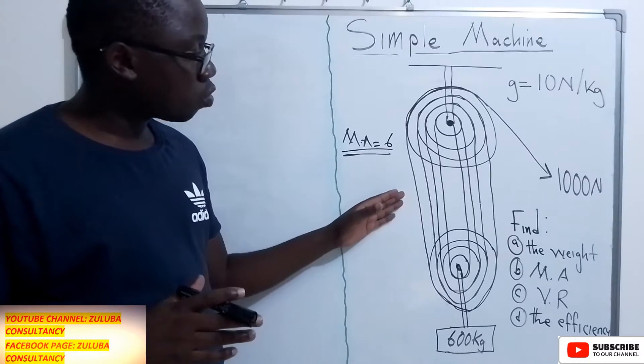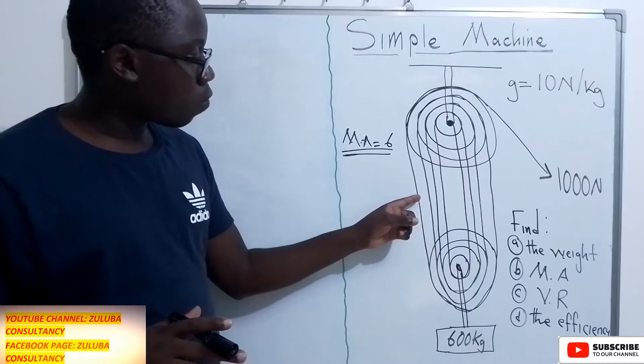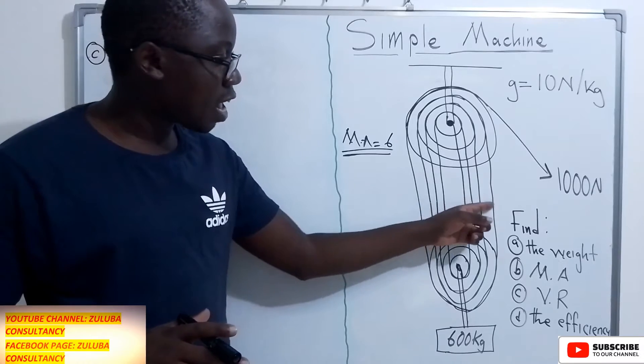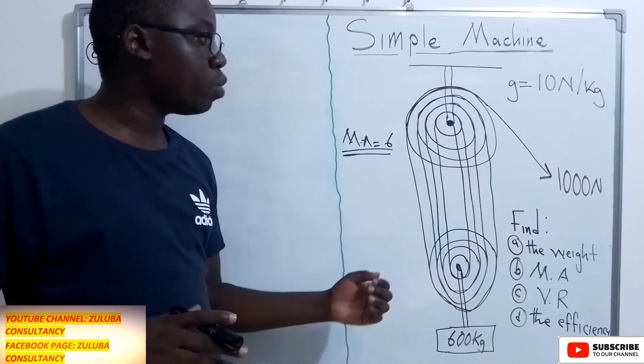Now when it comes to this diagram that we have, you can notice that we have one, two, three, four, five, six, seven, eight lines that are connected to the moving pulley.